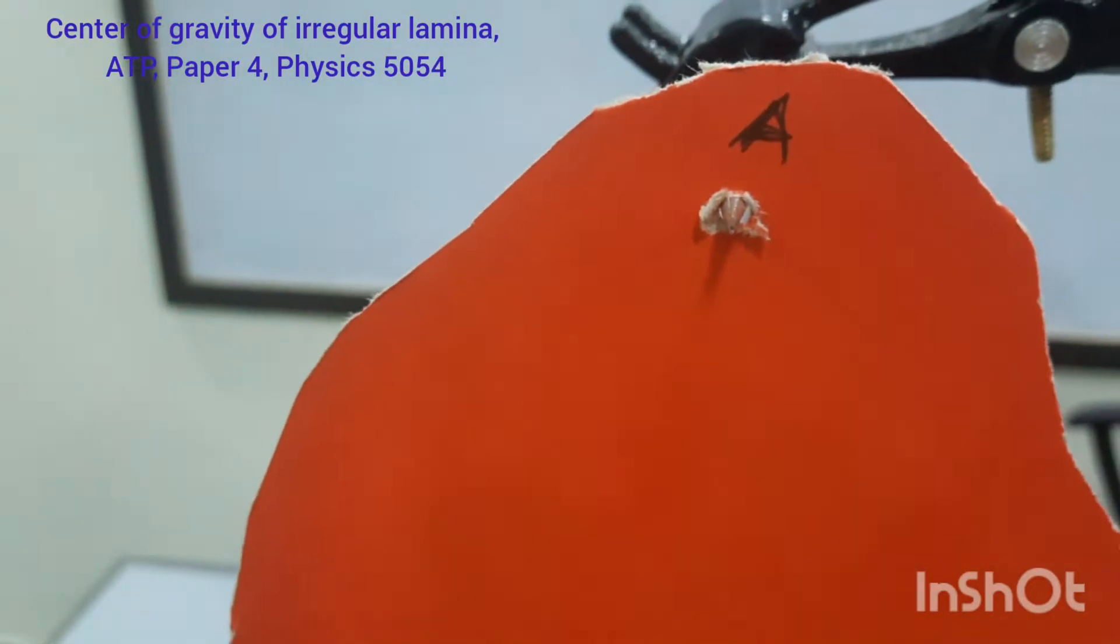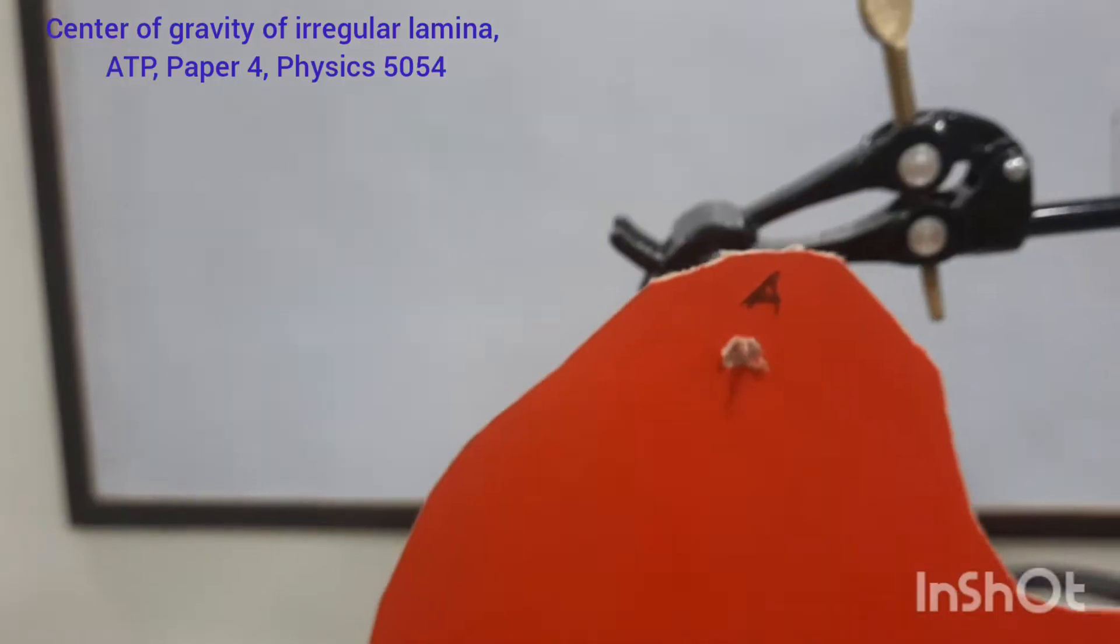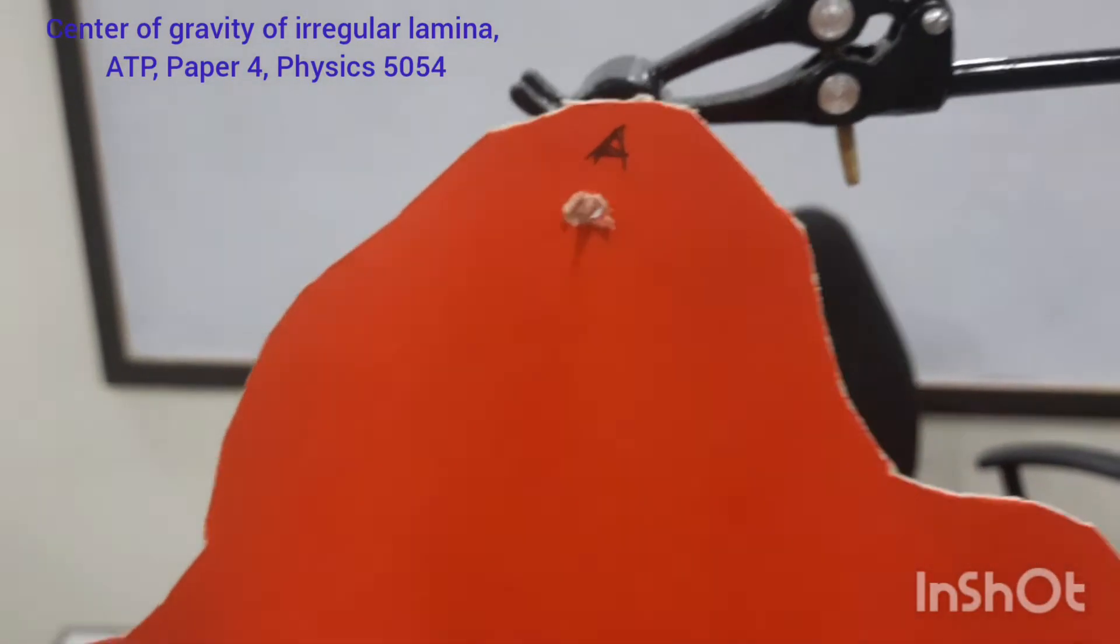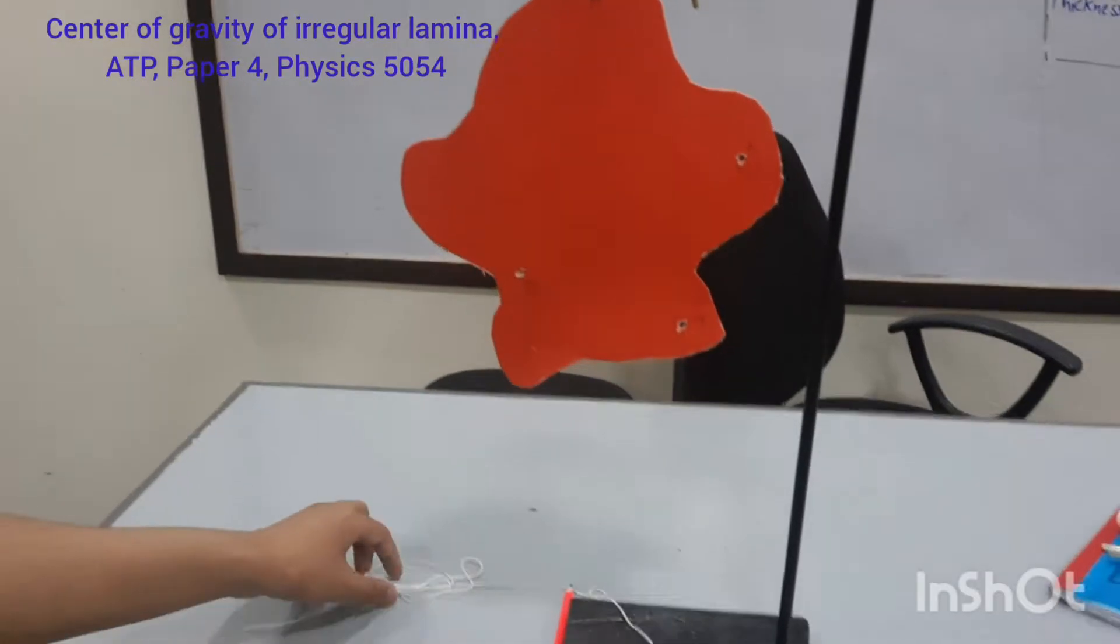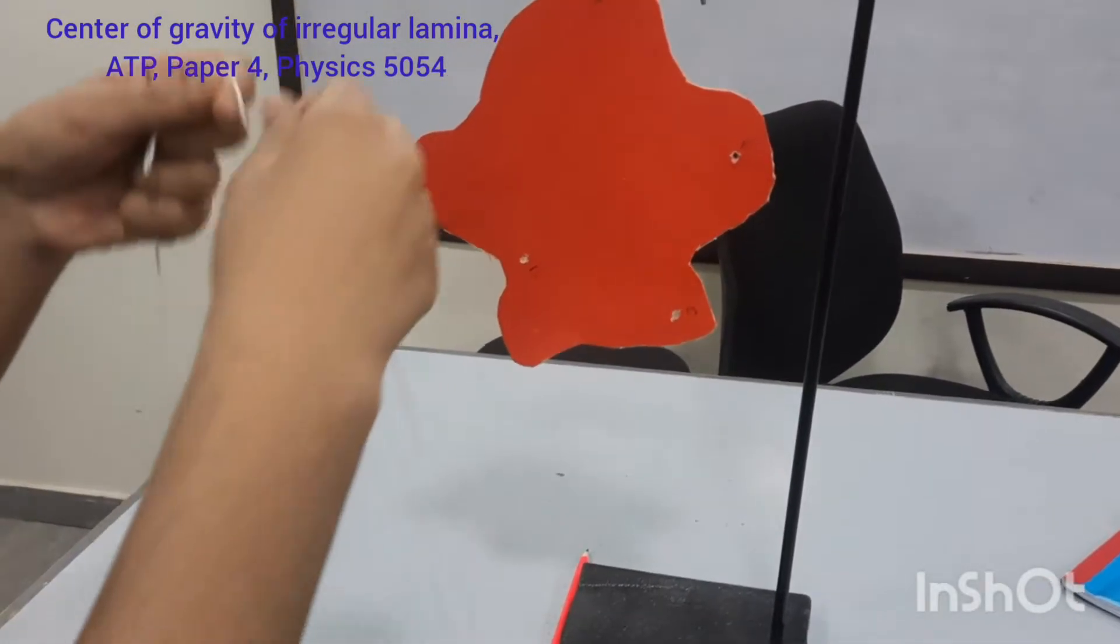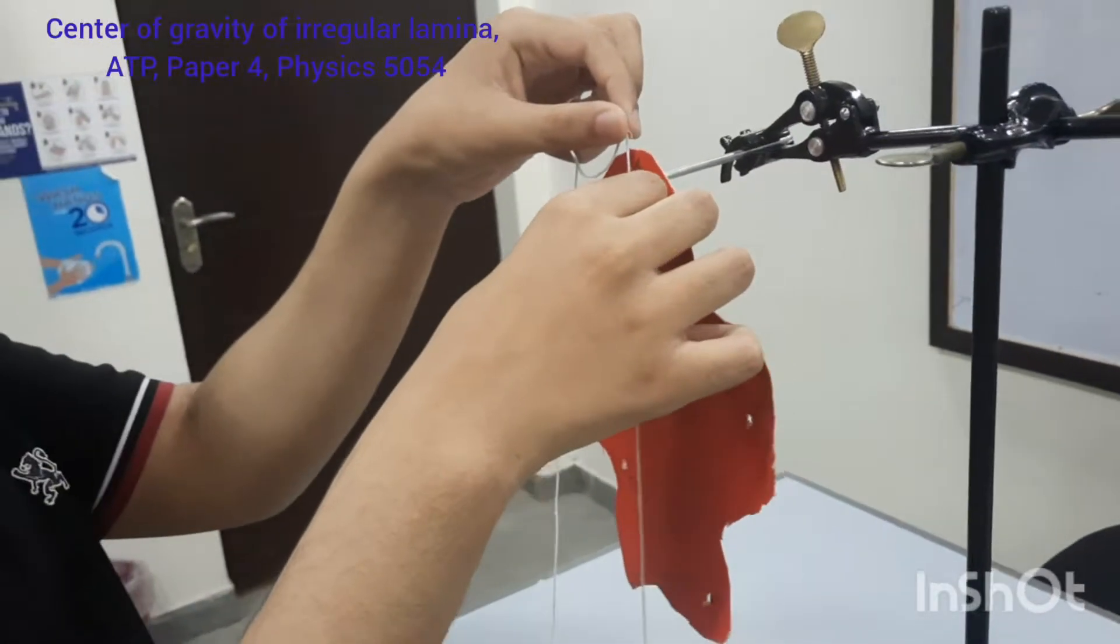So this hole is large enough so we don't have too much friction between the hole and the pin. So once this lamina becomes steady, as you can see it has become steady, then we will take the plumb line and I will hang the plumb line near the pin.